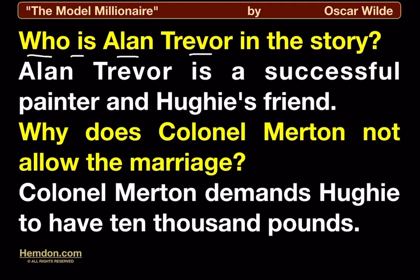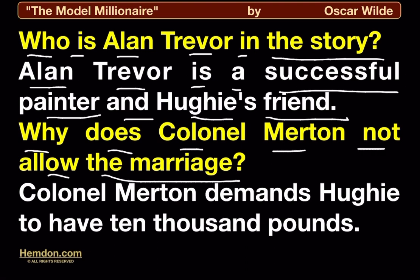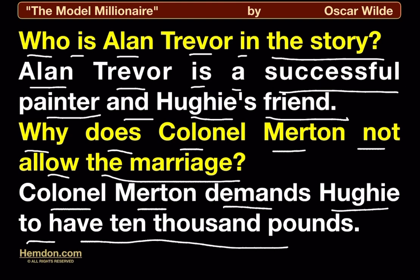Who is Alan Trevor in the story? Alan Trevor is a successful painter and Hugh's friend. Why does Colonel Merton not allow the marriage? Colonel Merton demands Hugh to have 10,000 pounds.